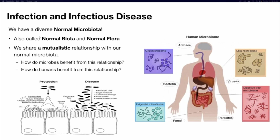First, infection and infectious diseases. We have normal microbiota that is very diverse — these are the microbes that call us home, also called normal biota or normal flora, all interchangeable terms. We have a mutualistic relationship with our normal microbiota, meaning we both benefit. Microbes benefit because they have a place to live and nutrients to use. We benefit because microbes protect us from disease — our normal microbiota takes up space and nutrients, preventing pathogens from binding, proliferating, and leading to infection.